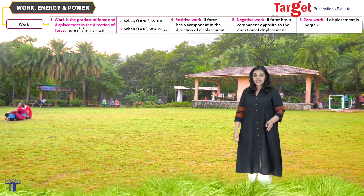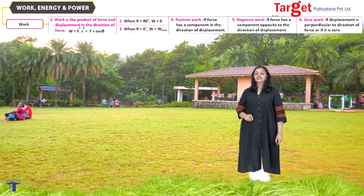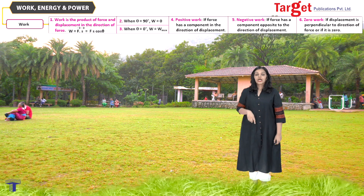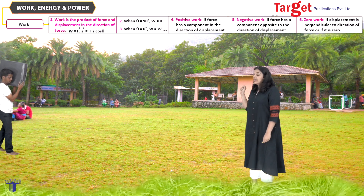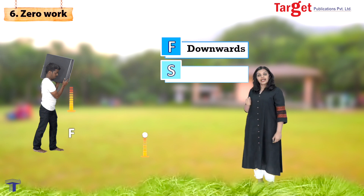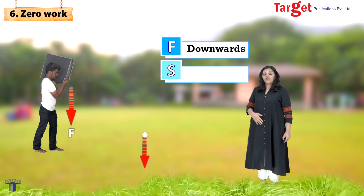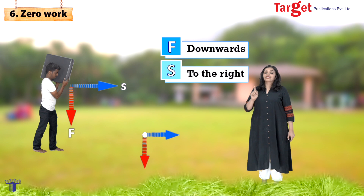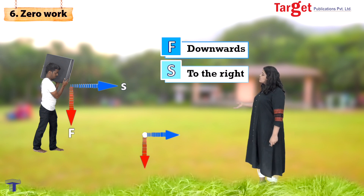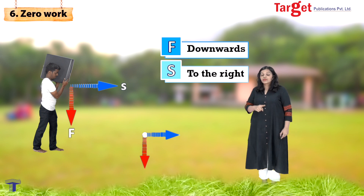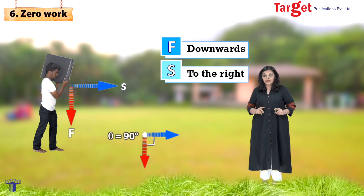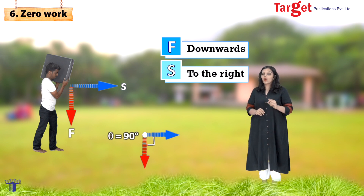The third and final type of work is zero work. By definition, zero work means that force and displacement are at 90 degrees — perpendicular — to each other. Look at this man carrying a heavy load. The gravitational force on this load acts in the downward direction, but the displacement of the object is to the right. The gravitational force and the actual displacement are at 90 degrees to each other, so gravitational force is doing zero work on this object.